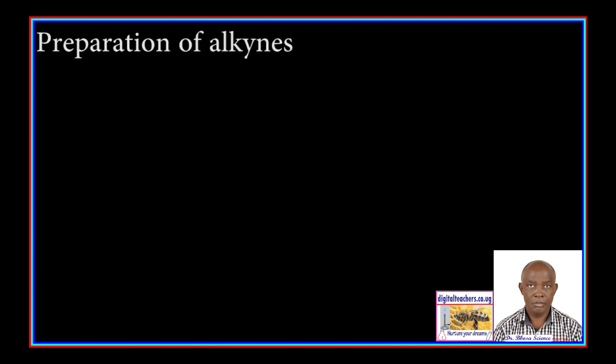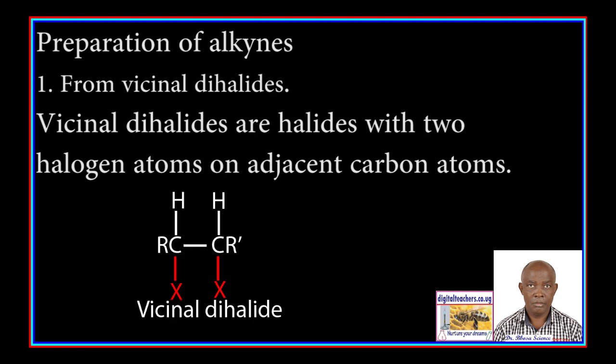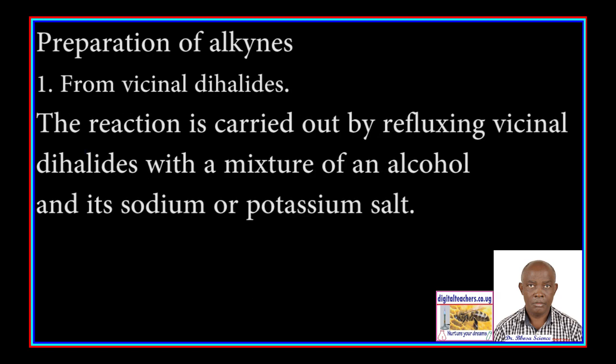Preparation: one, from vicinal dihalides. Vicinal dihalides are halides with two halogen atoms on adjacent carbon atoms in an organic compound. The reaction is carried out by refluxing vicinal dihalides with a mixture of an alcohol and its sodium or potassium salt.